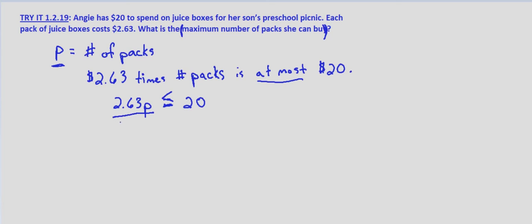So if we divide each side by 2.63, we get P is less than or equal to, that value is 7.6.